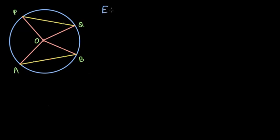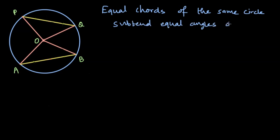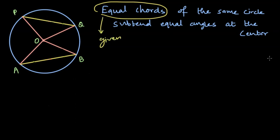We want to prove that equal chords of the same circle subtend equal angles at the center. So let me just highlight what is given to us. This is given to us, and what we need to prove is this subtend equal angles at the center.